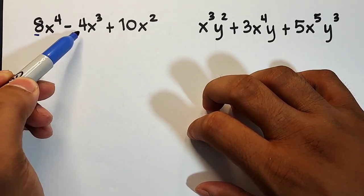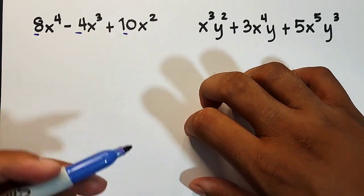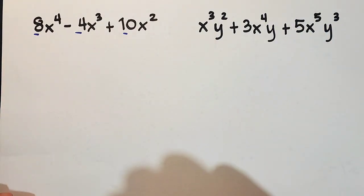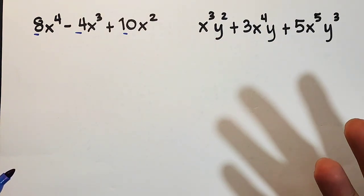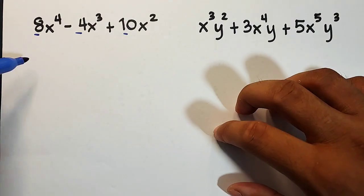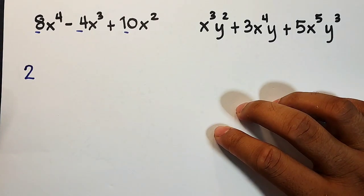So for this technique, first check the numbers. We have 8, -4, and 10. Find their greatest common factor. These numbers are even numbers, so they're divisible by 2. Their greatest common factor is 2. But don't stop there - consider if it could be 4 or 6. It can't be 4 or 6, so we'll use 2 as the greatest common factor.